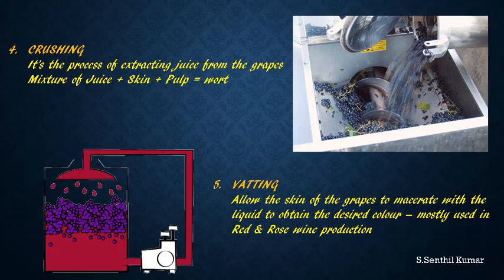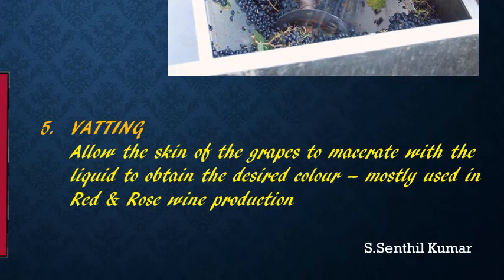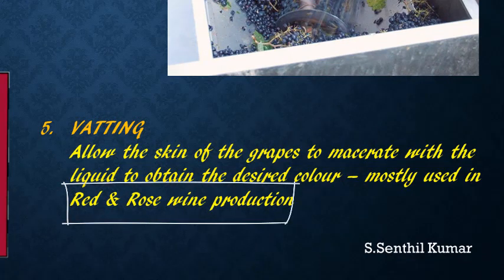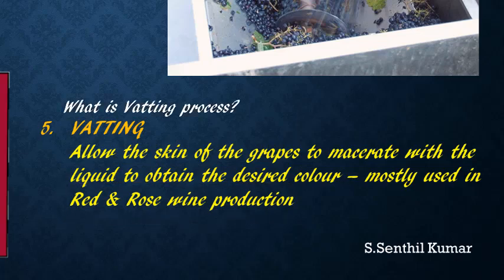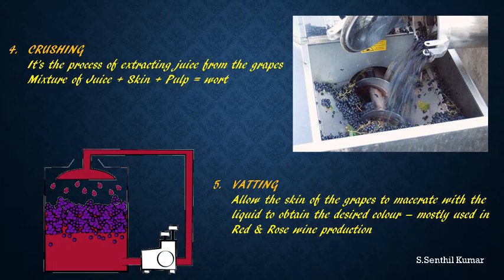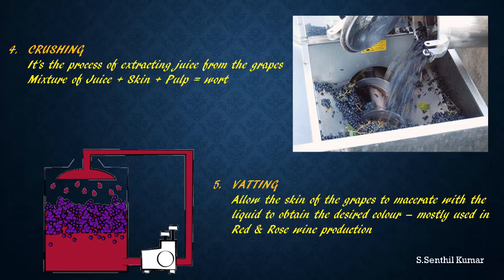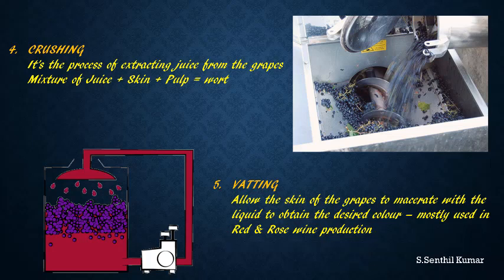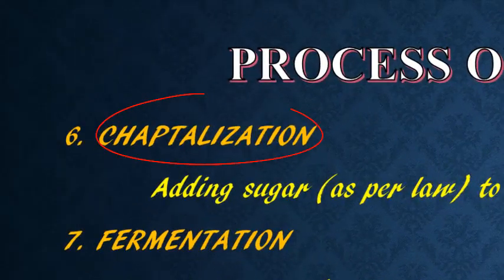The next step is the vatting process, which happens only for red wine and rosé wine. The vatting process allows the skin to macerate along with the juice to get the desired color for the wine. Every organization has its own target color, and the skin macerates until that color is obtained, after which the skin is removed. For white wine, vatting is not required because white wine doesn't need added color.